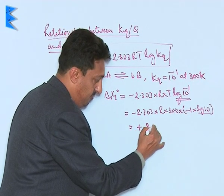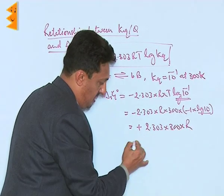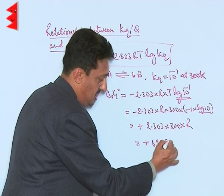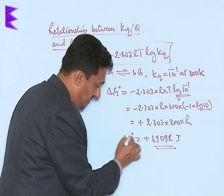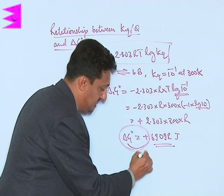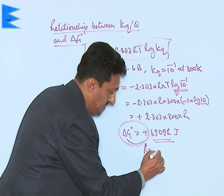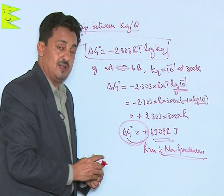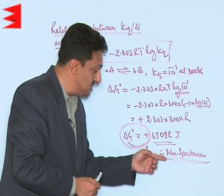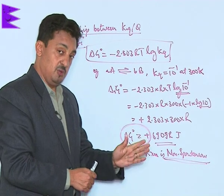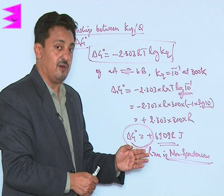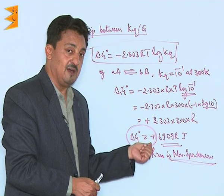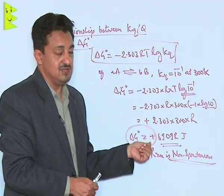So the negatives cancel, giving positive 2.303 into 300 into R, which equals positive 9096R joules. Since the free energy is positive, the reaction is non-spontaneous — it will not move towards the product side on its own. For all reactions where the equilibrium constant is less than 1, the smaller the value, the more positive the free energy, and the greater the non-spontaneity of the reaction.